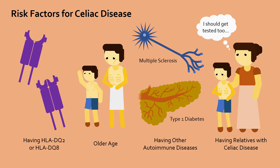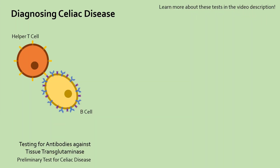But what are these tests? Since antibodies against tissue transglutaminase are produced and released into the blood in celiac disease, testing for the presence of these antibodies is often the first and easiest way to check for this disease, but is not 100% accurate.